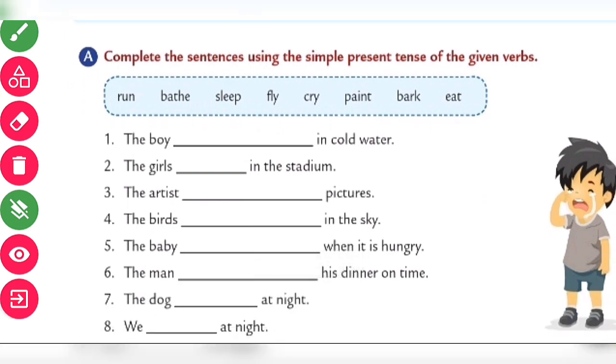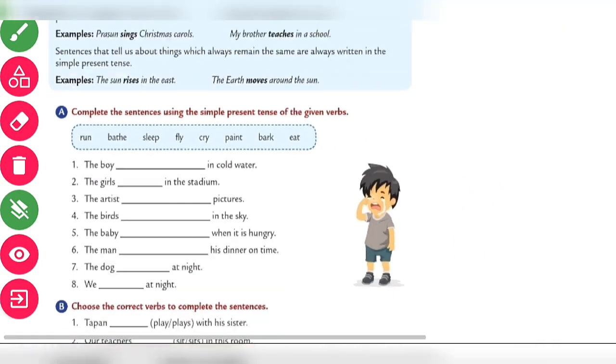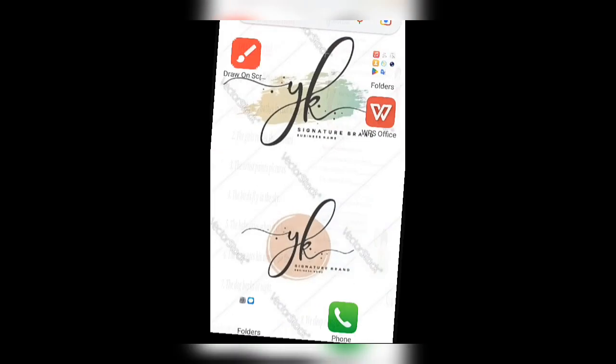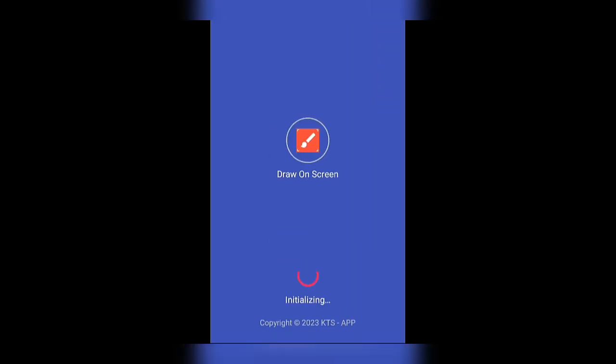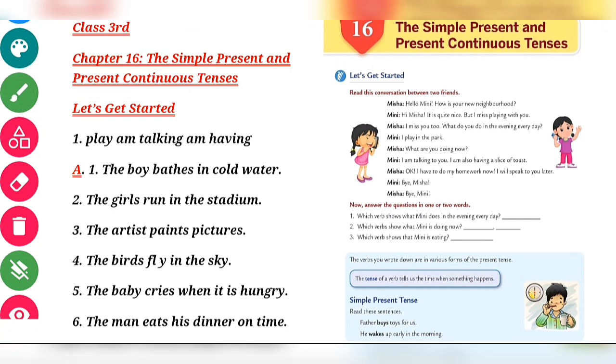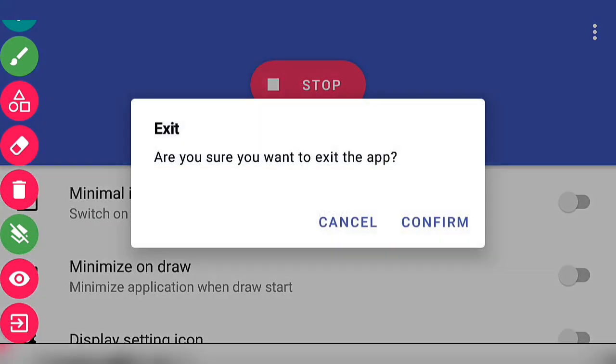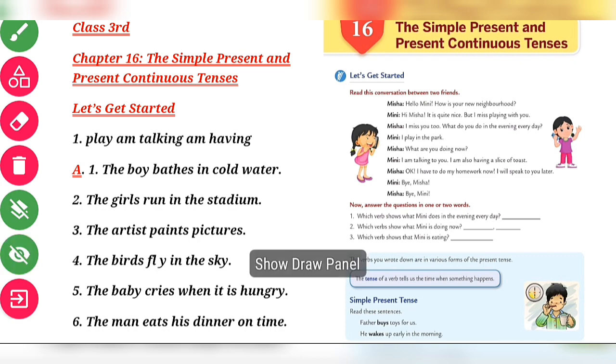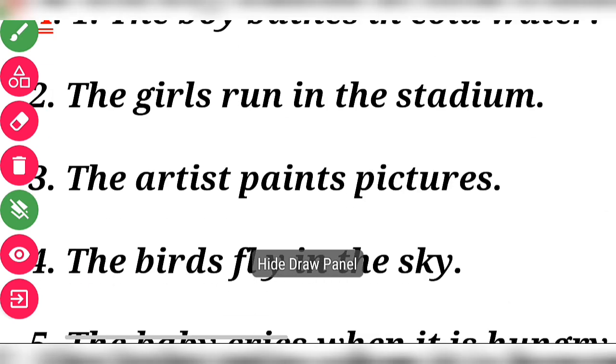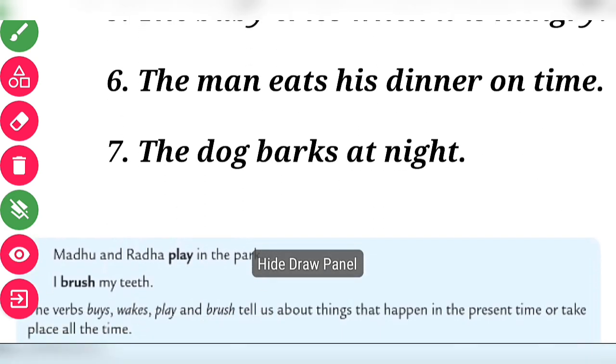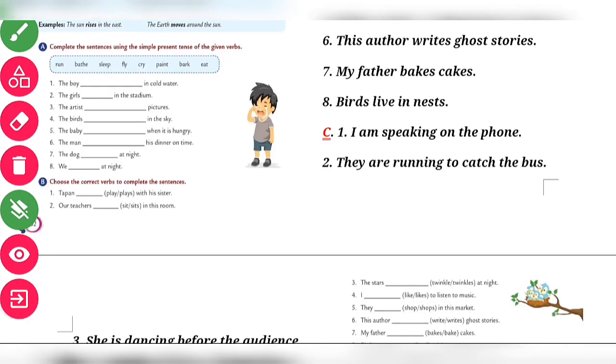Now exercise A. Complete the sentences using simple present tense from the box. The boy bathes - why bathes? B-A-T-H-E-S, because the boy is a singular subject. The girls run, the artist paints, the birds fly, the baby cries, the man eats, the dog barks.